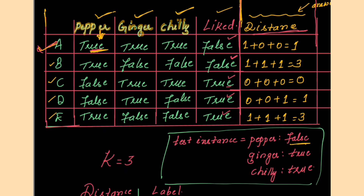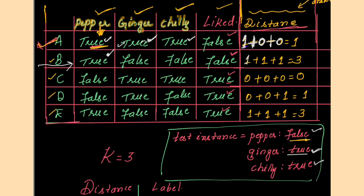Continuing row 1: ginger is true in the dataset and true in the test instance — both are same, so distance is 0. Chili is true in the dataset and true in the test instance — both are same, so distance is 0. Summing up: 1 + 0 + 0 = 1. For row 2: pepper true vs false — different, so 1. Ginger false vs true — different, so 1. Chili false vs true — different, so 1. Total: 1 + 1 + 1 = 3.